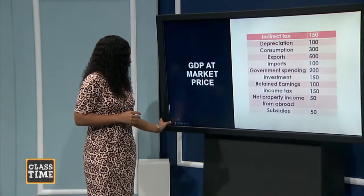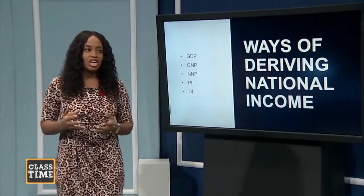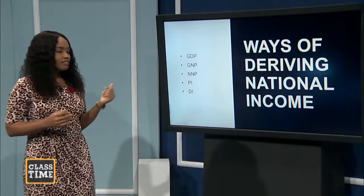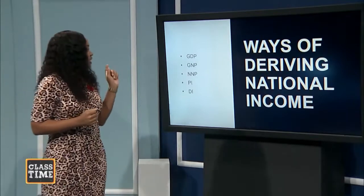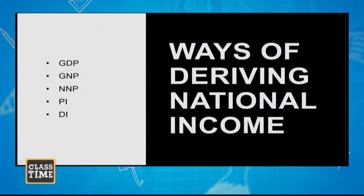We are going to look at the various ways for deriving national income. These include GDP (gross domestic product), GNP (gross national product), NNP (net national product), PI (personal income), and DI (disposable income).